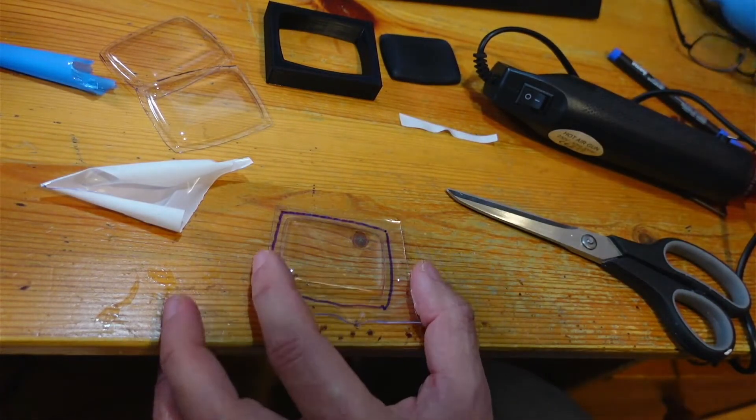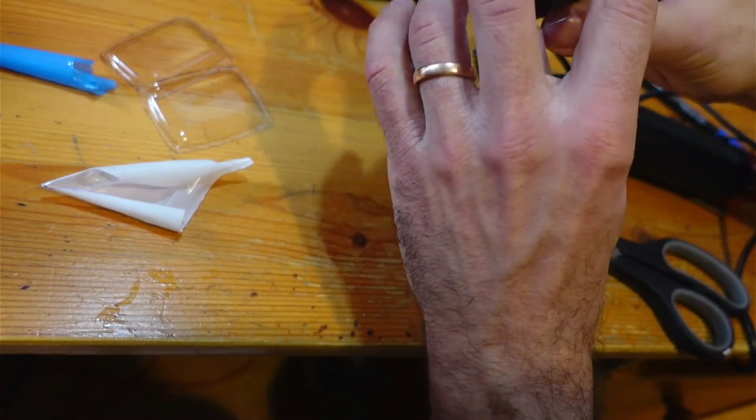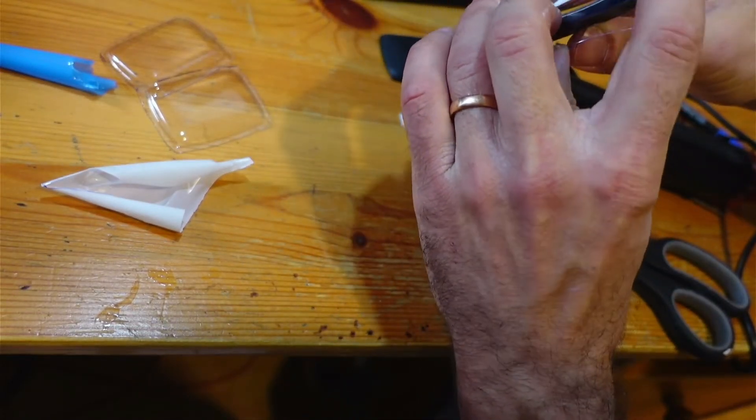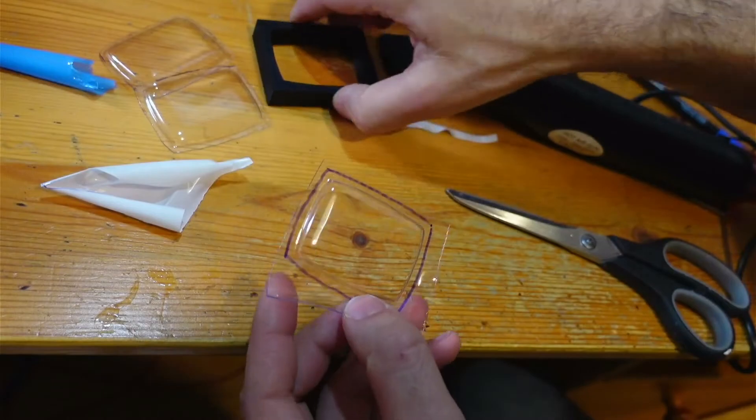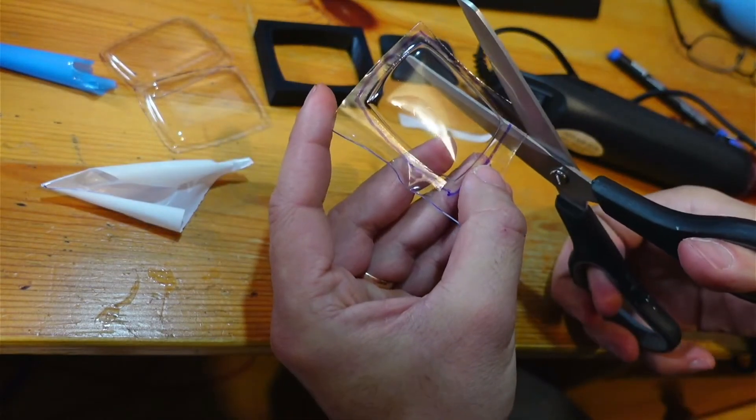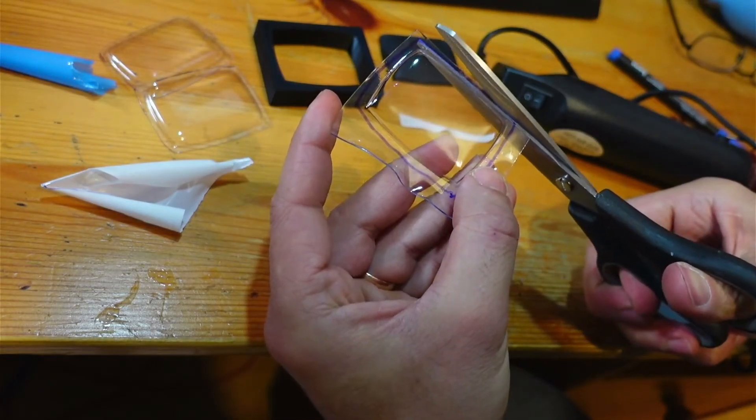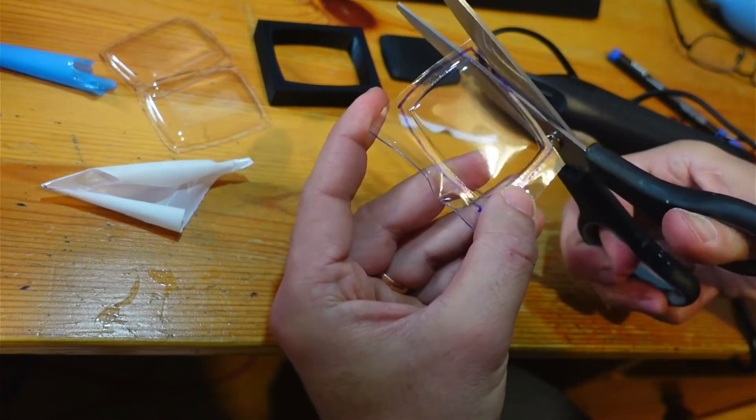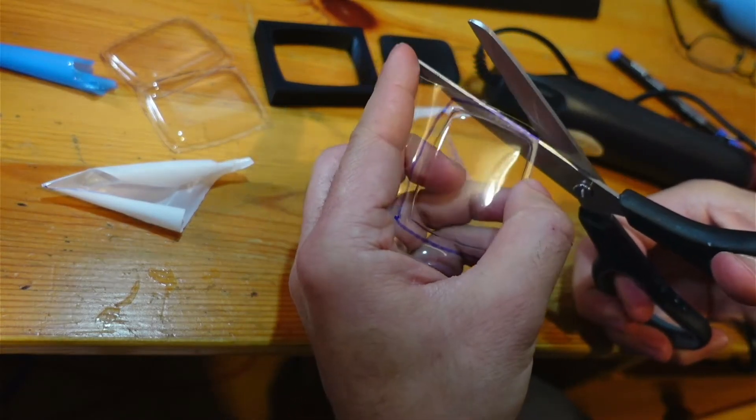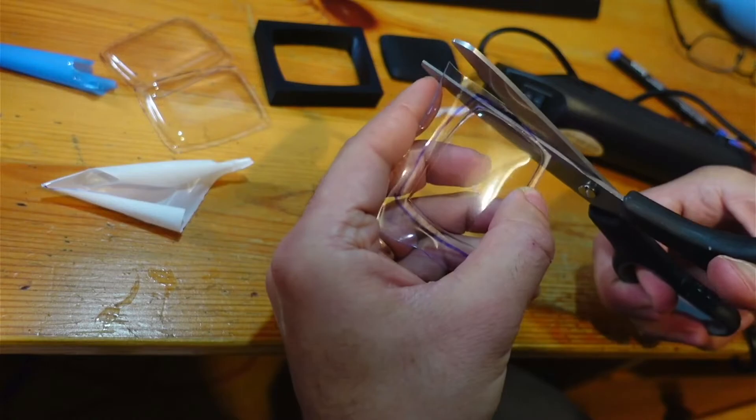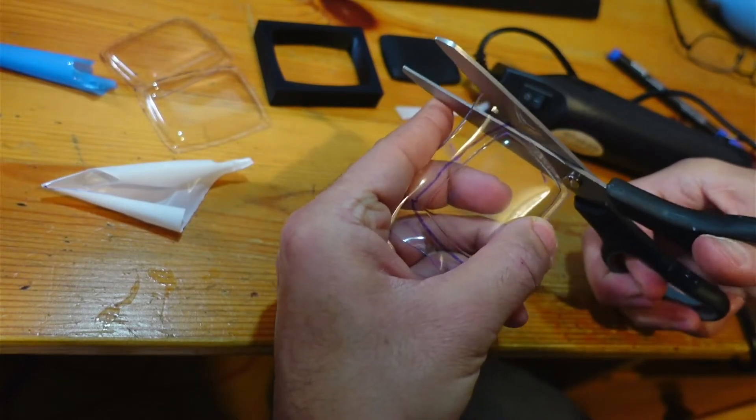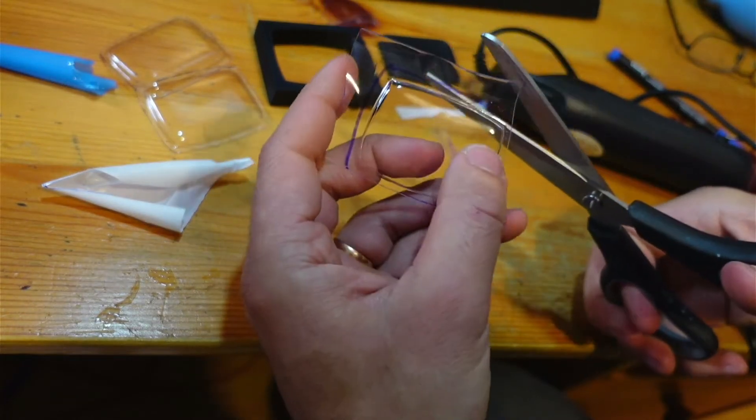I glued that onto the back of the faceplate using Araldite, just my particular method, but I assume hot glue might do it. Well that might actually cause some warping, so maybe that's not such a good idea. Anyway, I used Araldite and it worked fine.